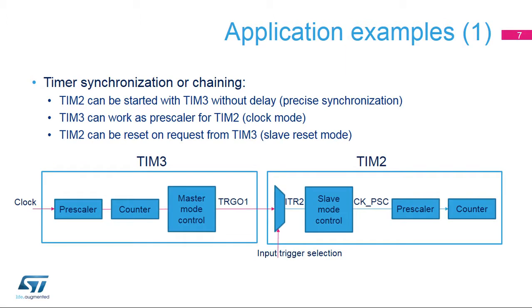The Interconnect Matrix can be used for synchronizing or chaining timers, allowing, for example, a master timer to reset or trigger a second slave timer. Timer 3 is used as the master timer and can reset, start, stop, or clock timer 2 configured in slave mode. Timer 3 is clocking timer 2 so that it acts as a prescaler for timer 2.